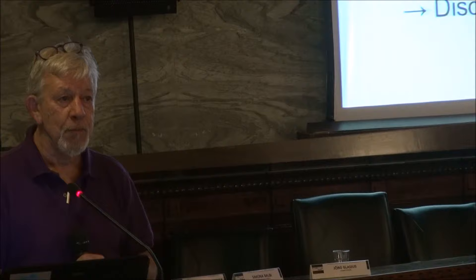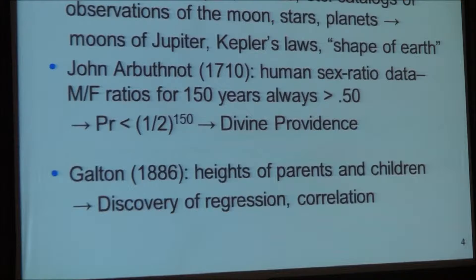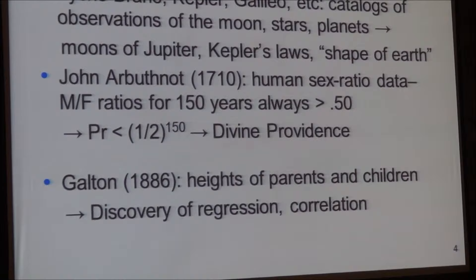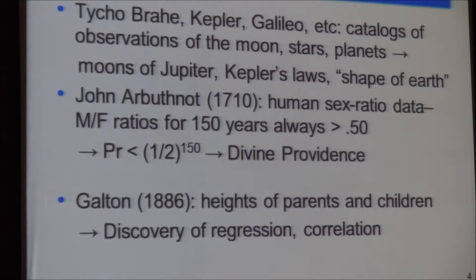The development of star catalogs by Tycho Brahe and others was used by Kepler to develop his planetary laws — questions about the shape of the Earth and other things in 16th and 17th century astronomy. John Arbuthnot tabulated the ratio of male to female births over a 150-year period in the UK and found that in every single year more males were born than females, by a ratio of about 0.51. He calculated the p-value — one half to the 150th power — giving an incredibly small number: the first significance test, used as an argument for divine providence. And Galton's collection of data on heights of parents and children occasioned the discovery of regression toward the mean.